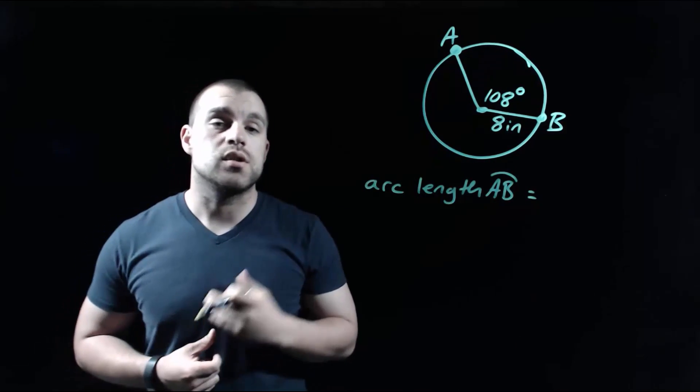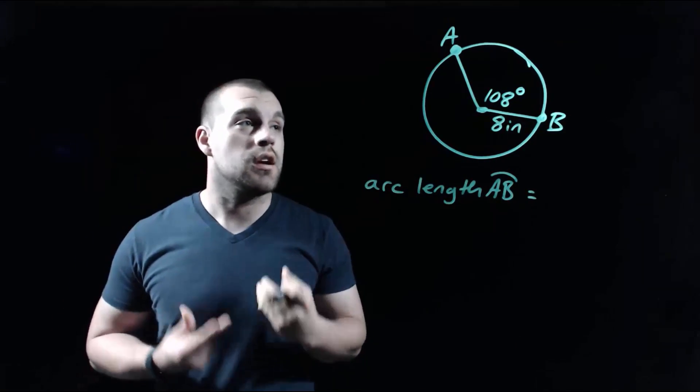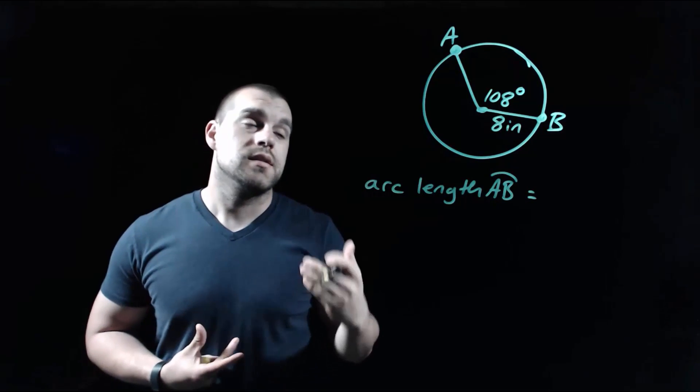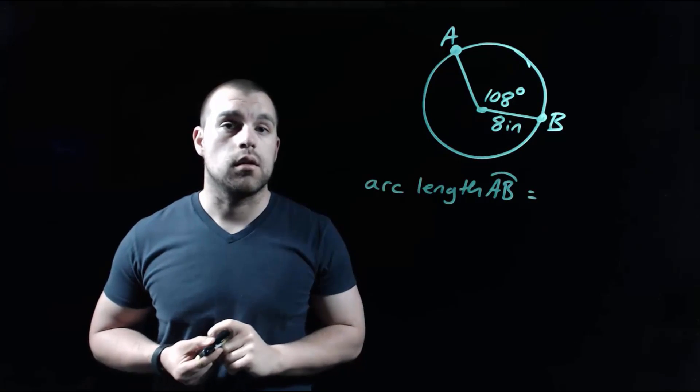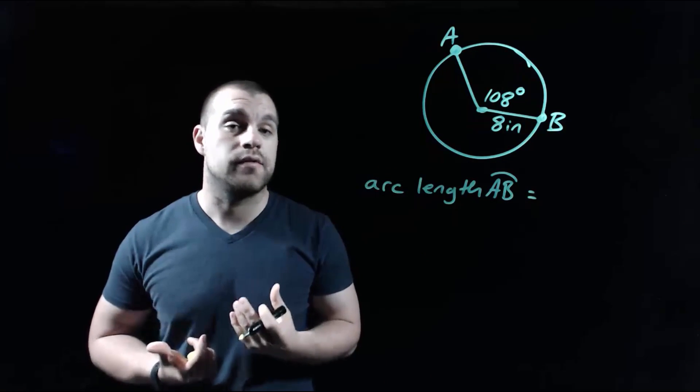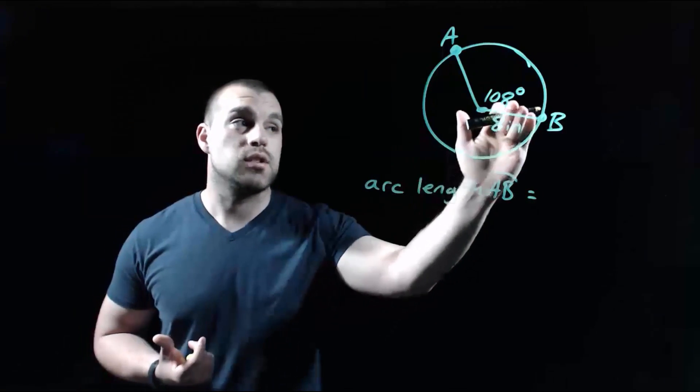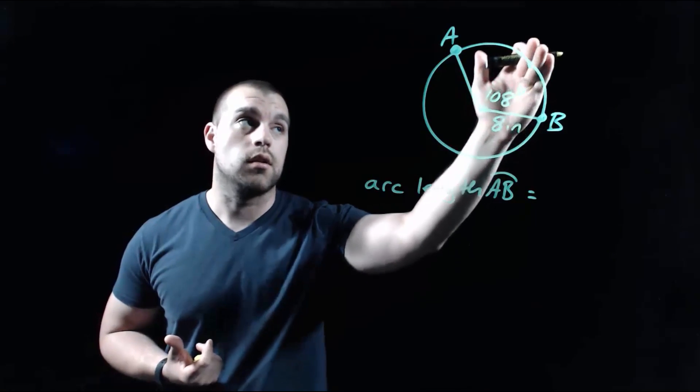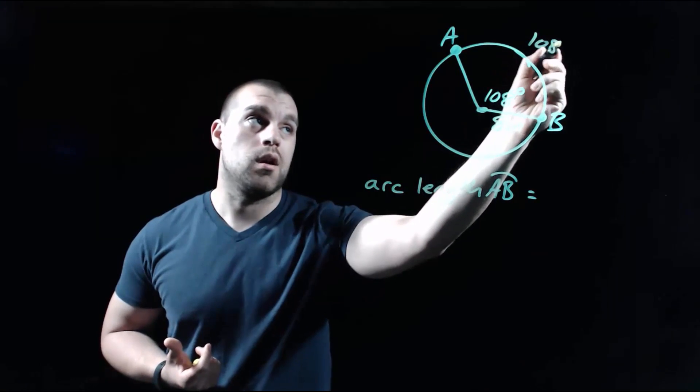So the first thing we need to know is the measure of the arc in terms of degrees. Since we're dealing with a 108 degree central angle, remember the measure of a central angle is the exact same as the measure of the arc that it intercepts. So since we've got a 108 degree central angle, this arc is also 108 degrees.